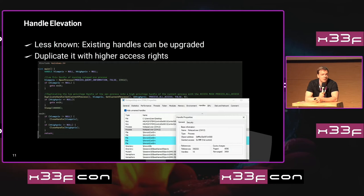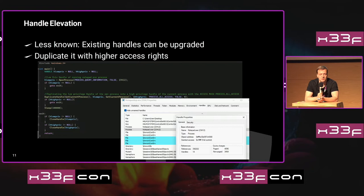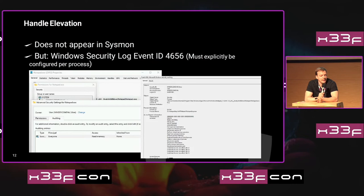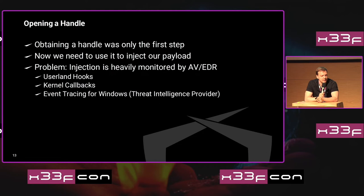What is probably less known is that existing handles can also be upgraded. You can create a new handle on the target process with a very limited access mask which doesn't show your real intent, and then before you use it, you duplicate it again with a different access mask. This is really cool because there's no suspicious process access event — only the duplication of a pre-existing handle with another access mask. There are kernel callbacks for handle duplication but Sysmon is not subscribing to this callback. It can still be observed in the Windows security log, but it must be explicitly configured per process and is not enabled by default. I really like this approach to get a handle to another process.